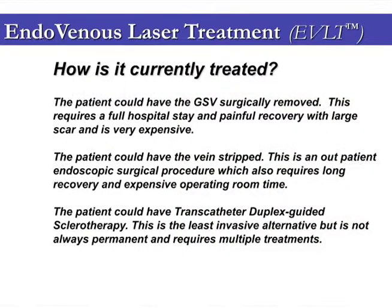There are several treatments for varicose veins. In general, incompetence in the greater saphenous vein is treated by surgical removal and ligation of the sapheno-femoral junction. This requires a stay in hospital, cuts, and occasionally a painful recovery. This operation is associated with stripping of the long saphenous vein in the thigh segment from the groin to the knee.